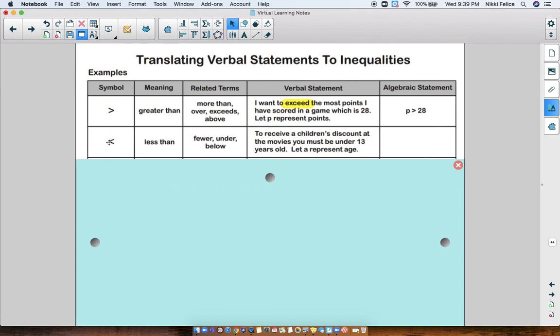Here's my less than symbol. Other terms or phrases that could mean less than are fewer, under, below, things like that. So here's my example. To receive a children's discount at the movies, you must be under 13 years old. I'm going to use the variable A to represent age. So if your age needs to be under 13, that means your age needs to be less than 13. So our statement would be A is less than 13.